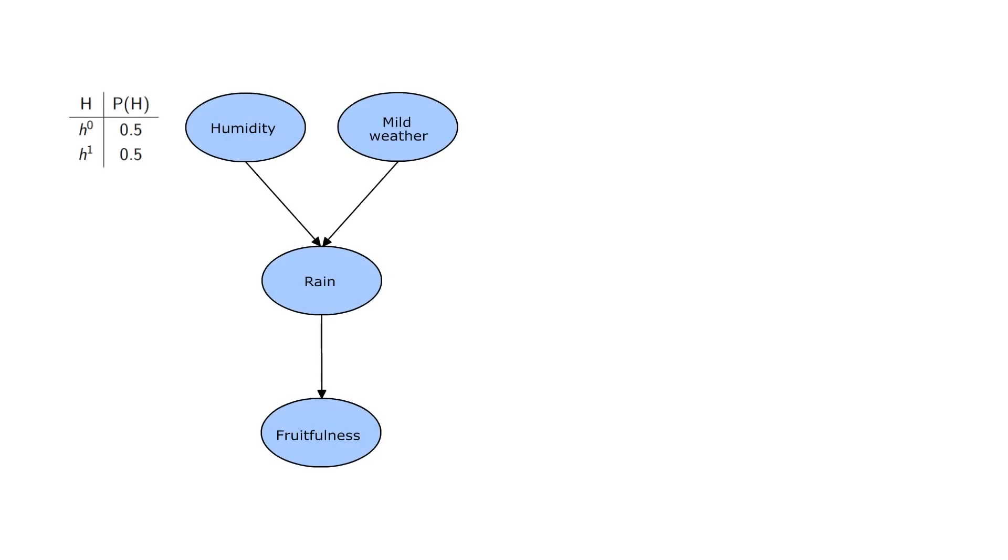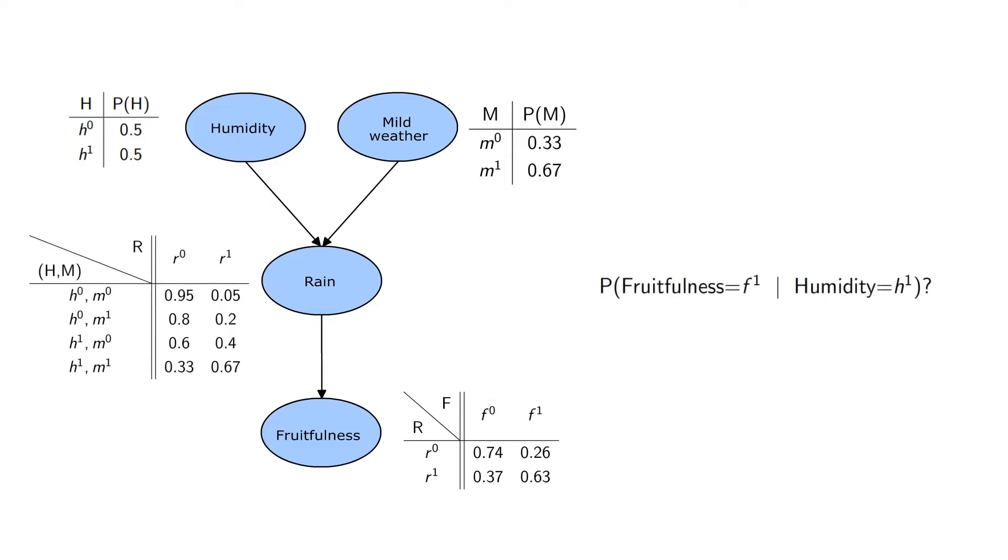Imagine that the fruitfulness of a tree is determined by the following Bayesian network. We want to know the probability of a fruitful tree given the observation that the weather is humid.